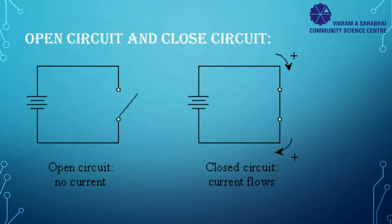If a circuit is open, the connection between all the components is broken and the electrical current cannot flow. If a circuit is closed, all the components are connected and the electrical current can flow.